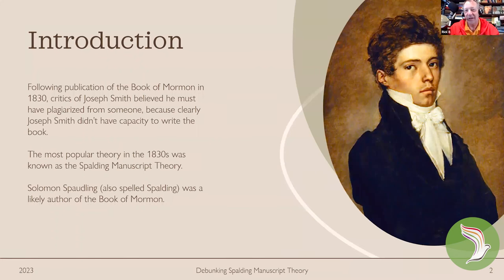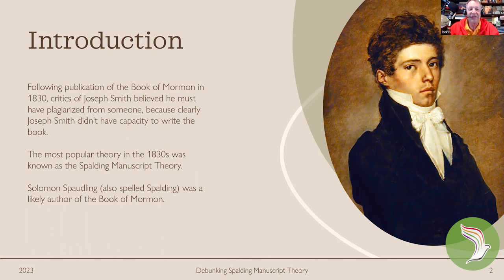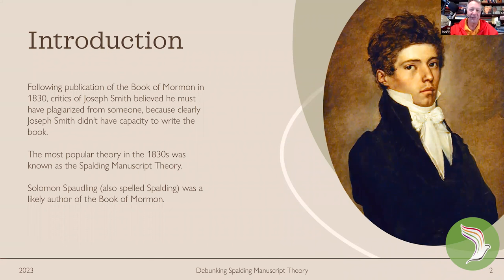This is a picture or painting of Solomon Spalding. I'm amazed that this theory never seems to die, so I kind of wanted to address it. Following publication of the Book of Mormon in 1830, critics of Joseph Smith believed he must have plagiarized it from someone, because clearly Joseph didn't have the capacity to write that book. Back in 1830, everybody was like, Joseph's way too dumb to have written this sort of thing. The most popular theory was known as the Spalding Theory. You'll notice Spalding is spelled with and without a U in it.